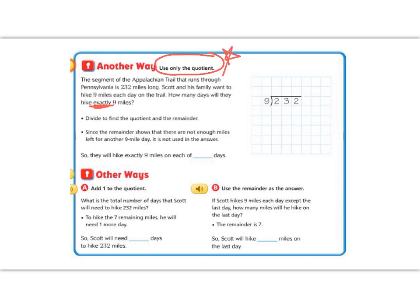So let's divide first. 9 doesn't go into 2, but 9 does go into 23. 9 goes into 23 two times, which is 18. 3 minus 8 we can't do, so we have to borrow. 13 minus 8 is 5, and 1 minus 1 is 0. Bring down the 2. 9 goes into 52 five times, which is 45. We subtract. So we're left over with 7, but they said how many days will they hike exactly 9 miles? So in order to know exactly, we just use the quotient. So our answer is 25, no remainder.